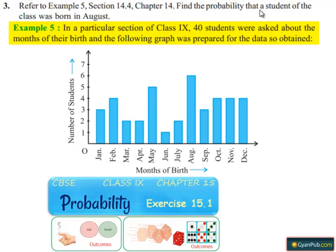Find the probability that a student of the class was born in August. Let's read example number 5.